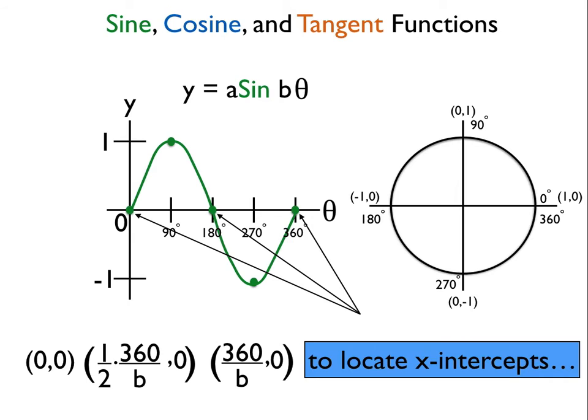And then my third point will be 360 divided by b. And those are the three points at which my sine graph will cross the x-axis. And that's how I locate my x-intercepts. This formula works for any sine graph that I have. All I got to know is what my b coefficient is, and then I can use this.